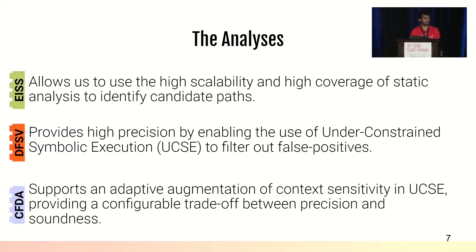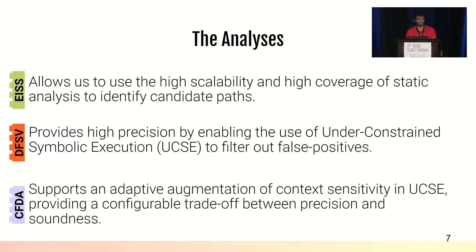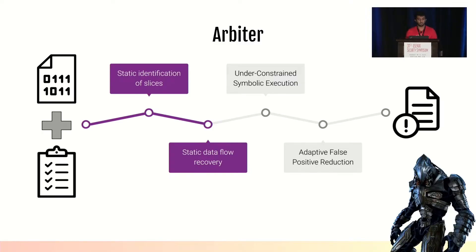These properties allow us to combine static and dynamic analysis to get the best of both worlds. The easily identifiable sources and sinks property allows us to use static analysis for high coverage and scalability to identify candidate paths. The dataflow-sensitive vulnerability property allows us to use dynamic analysis — specifically under-constrained symbolic execution — for high precision. The control flow-determined aliasing property allows us to adaptively augment context sensitivity in under-constrained symbolic execution, providing a configurable tradeoff between precision and soundness.